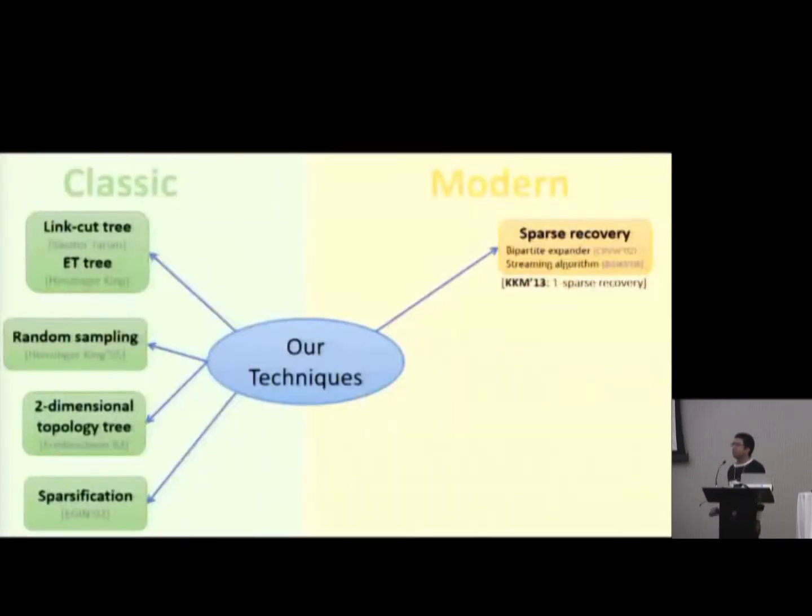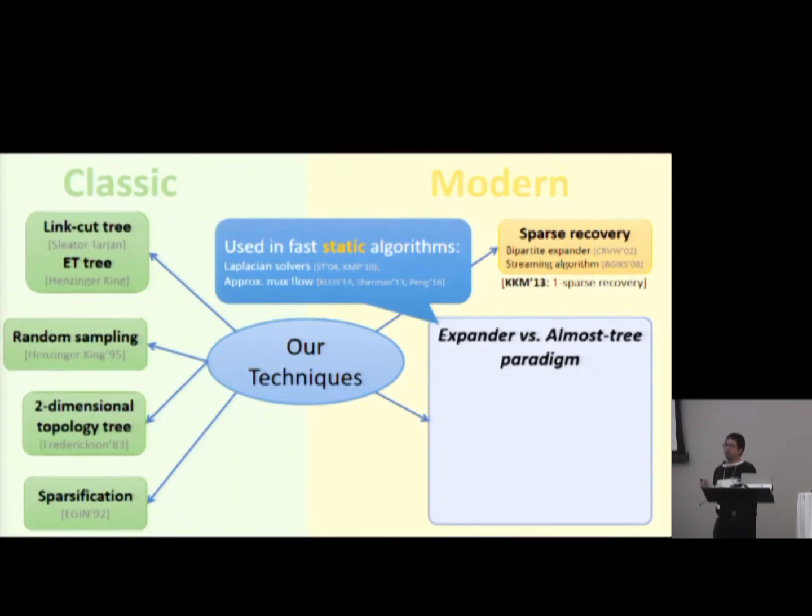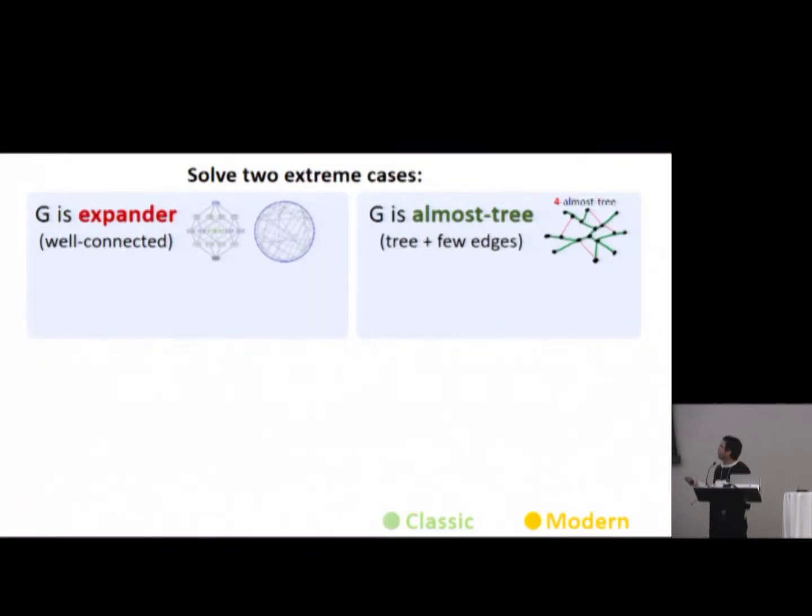Let's see the high level idea. The idea is to use many techniques. We combine many classic techniques in the field of dynamic graph algorithms. Here is the list. And also combine with some modern techniques, like sparsification and random sampling. But what I want to highlight is the new thing. That is, we use the expander versus almost tree paradigm. And this is something that is used successfully for static algorithms before, for example, like Laplacian solver and fast max flow. But we use this in dynamic setting.